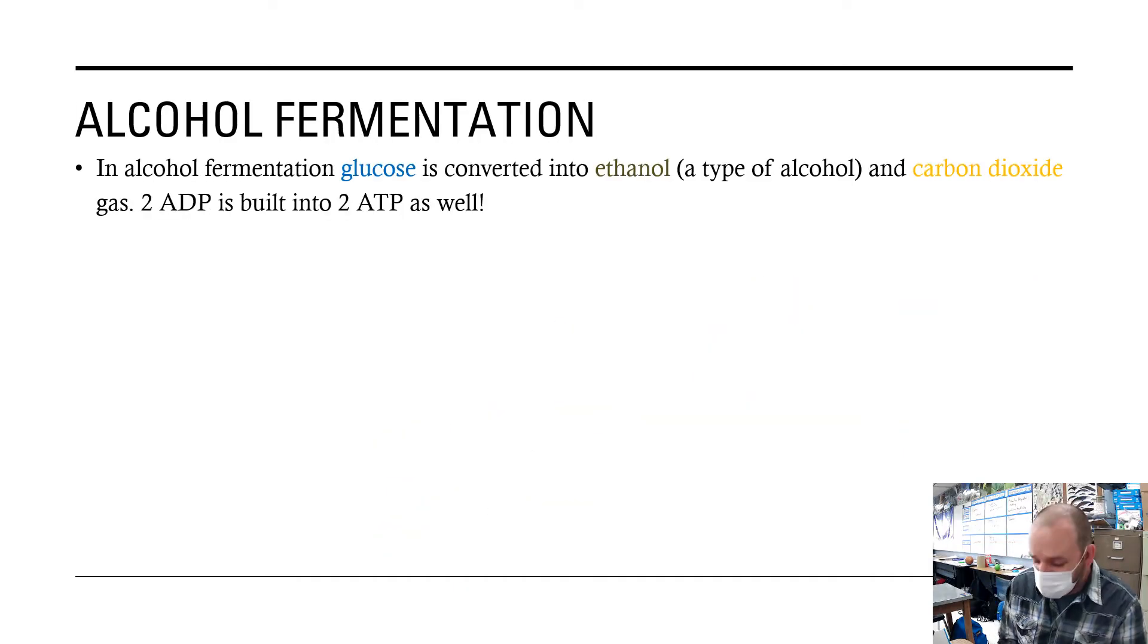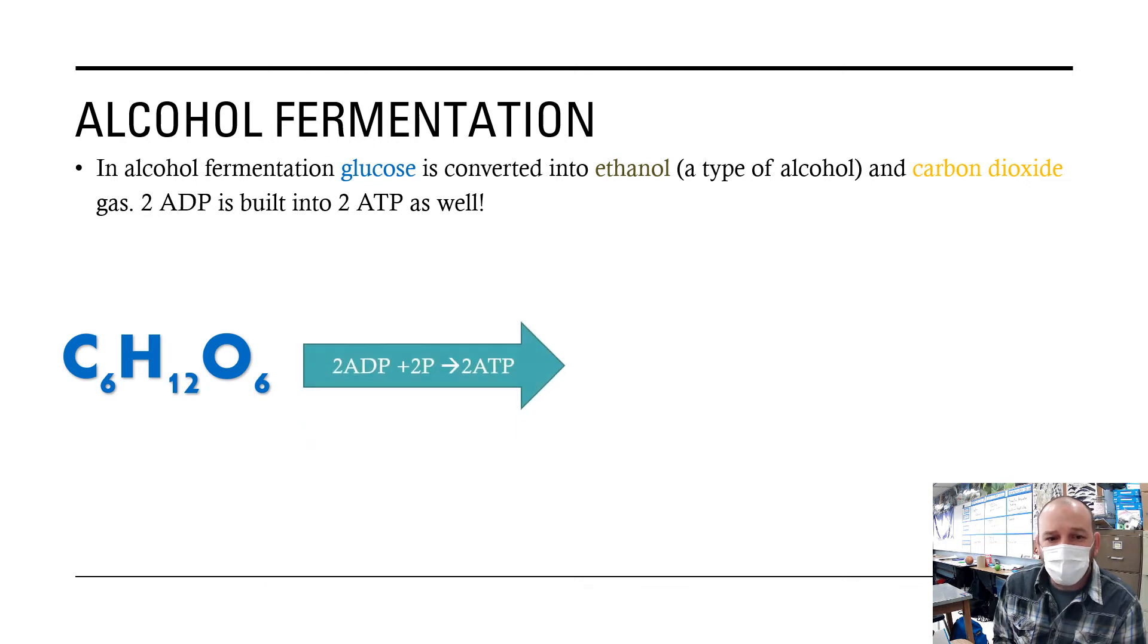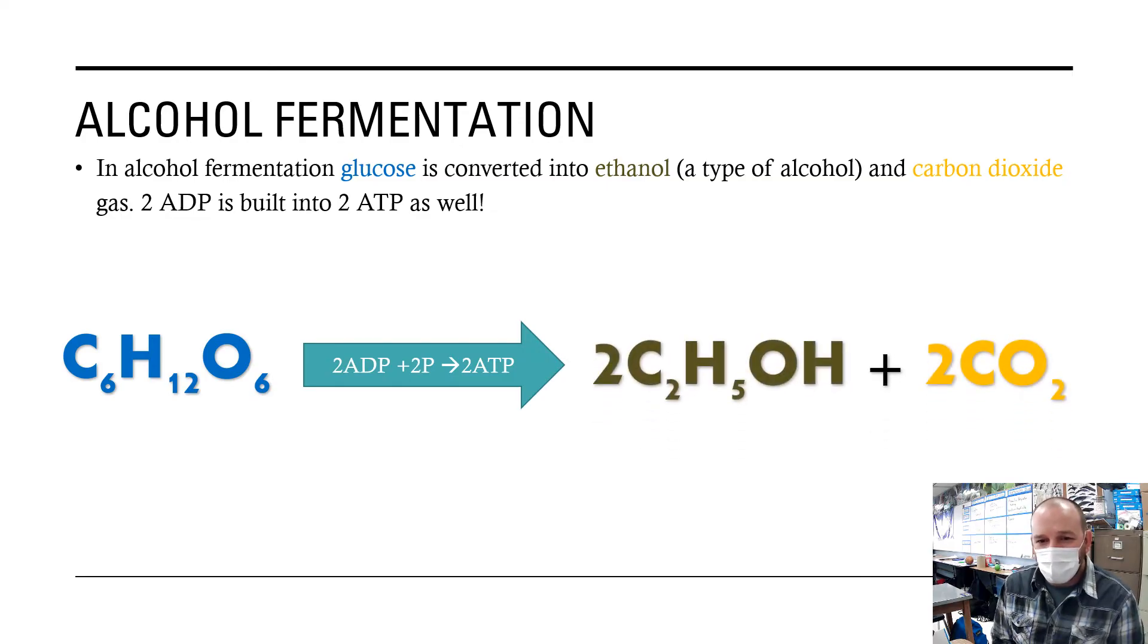The other type of fermentation is alcohol fermentation. In this case, we start with glucose. The process converts adenosine diphosphates and phosphates to adenosine triphosphate, and we make two ethanol alcohols.